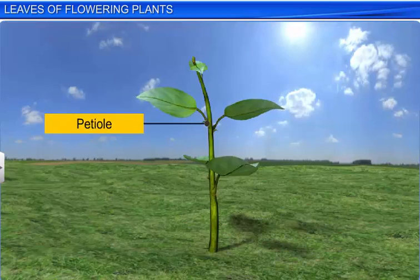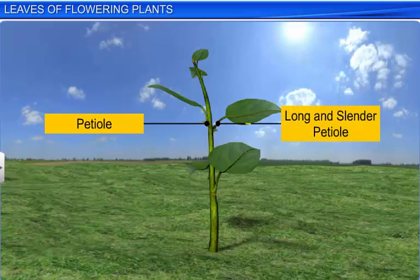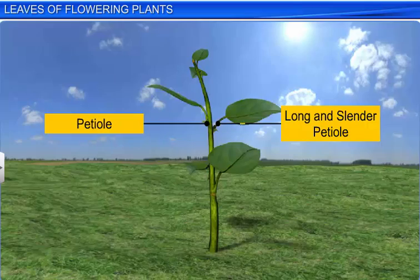The petiole helps the leaf to tilt in the direction of light. If the petiole is long and slender, it helps the leaf to move in the air and bring fresh air to the surface.